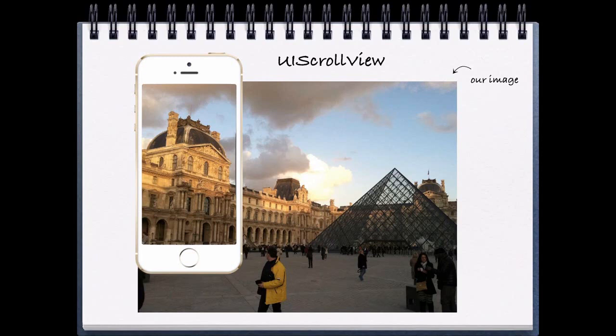Another cool feature of UIScrollView is the ability to page. If we simply set the property value pagingEnabled to YES, the scroll view will stop on multiples of the scroll view's bounds. Think about our home screen again, where all of our applications are loaded — you can scroll to the left and the right and the swipe locks onto the screen. All of this is implemented in UIScrollView.